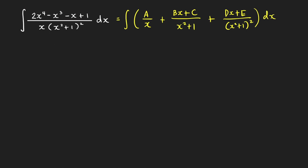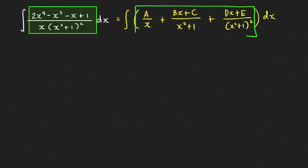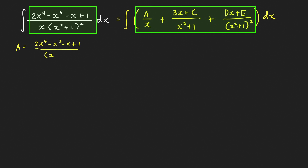How do we find the values of the constants A, B, C, D, and E? We can use a cover-up technique to find the value of A. A is just equal to the value of the rational function without the x in the denominator — that is, the numerator over x squared plus 1 quantity squared — evaluated at x equals 0. We'll get 1 over 1 squared, which is just equal to 1.